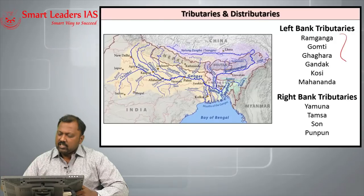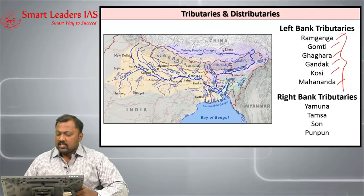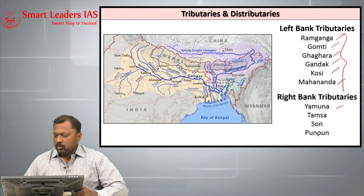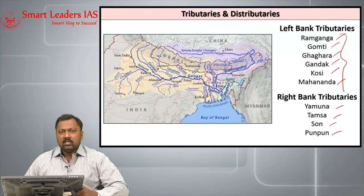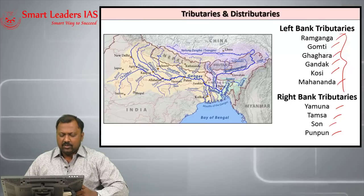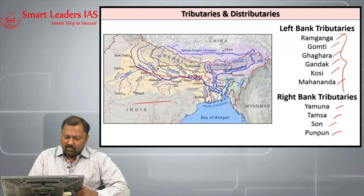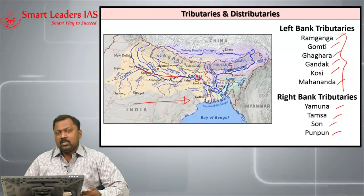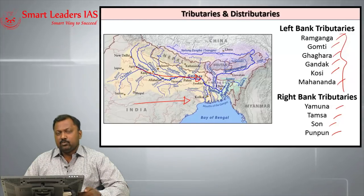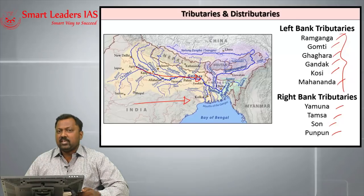The left bank tributaries of river Ganga include Ram Ganga, Gomati, Ghagra, Gandak, Kosi and Mahananda. The right bank tributaries include Yamuna, Tamsa, Son, Punpun etc. The right and left bank tributaries are understood by going along with the river system. When you travel along with the river, tributaries coming in from the left are left bank tributaries, and those joining from the right are right bank tributaries.